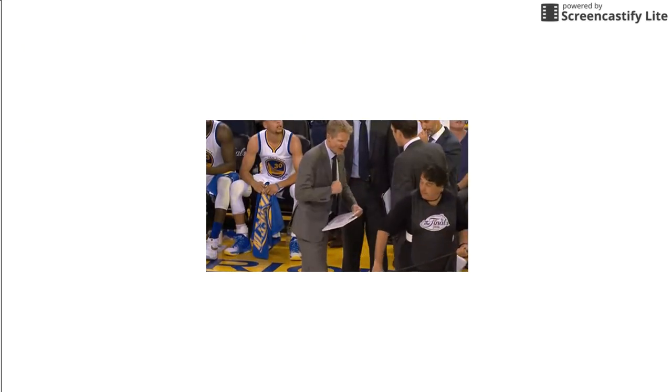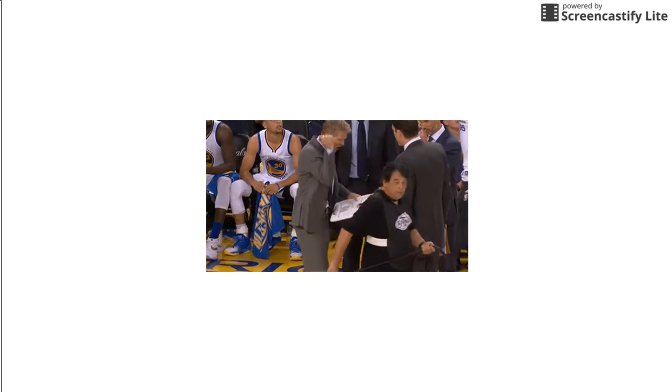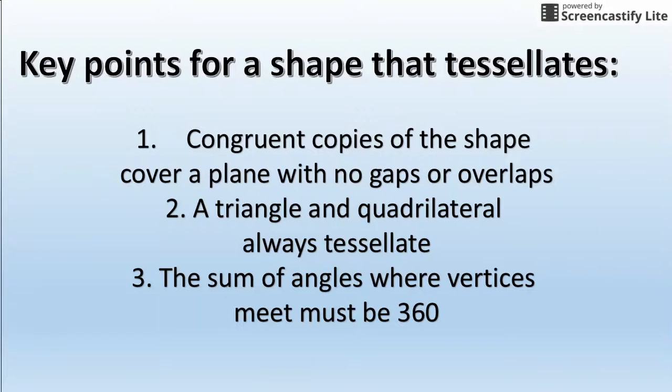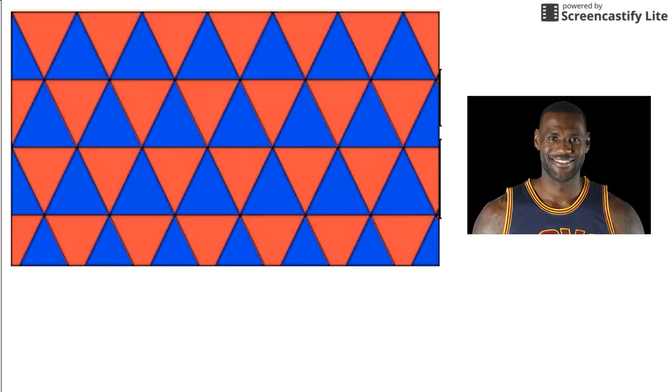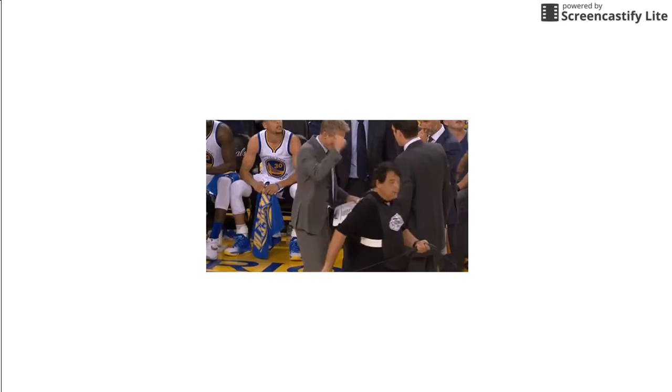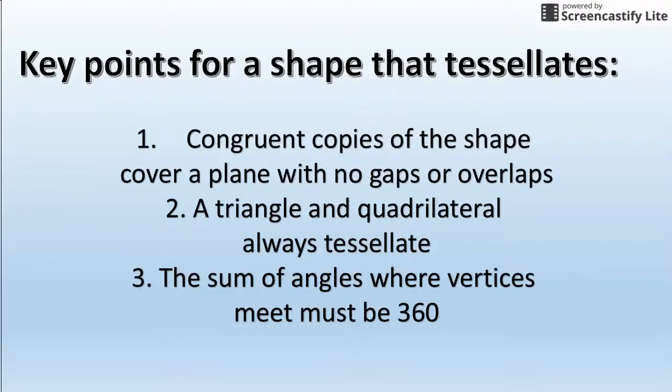Steve Kerr once again. Boom! Sorry, Steve. I'm happy to look next time. Maybe Andrew Bogut on tomorrow's game will know what shapes tessellate. So, number two, a triangle and a quadrilateral always tessellate. If you go back here, take a look. There's a triangle. LeBron got it right. LeBron is a winner. He knows that a triangle always tessellates. Oh, sad Steph Curry. Confused-looking Draymond. And an angry Steve Kerr.